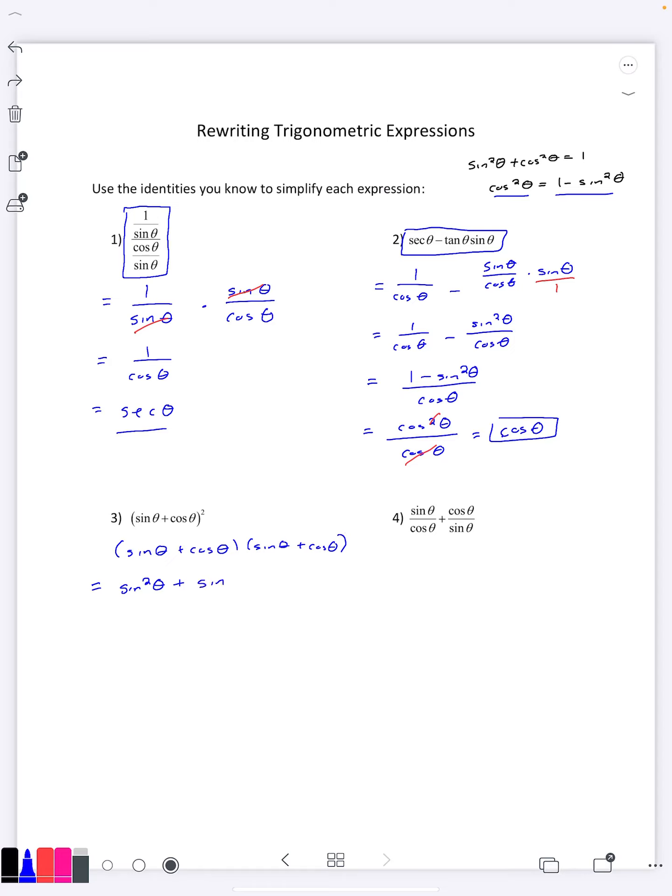The outer would be sine times cosine, the inner would also be sine times cosine, and the last would be cosine squared. Now we can combine together sine squared plus cosine squared, that's going to be one.